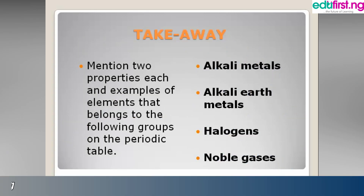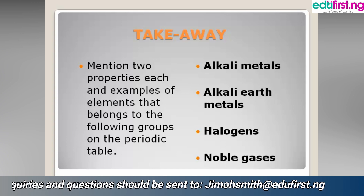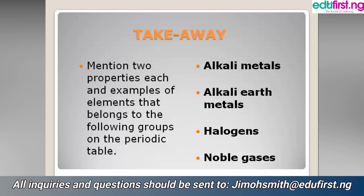That is the content for today. The take-home assignment is to mention two properties and examples of elements that belong to the following groups on the periodic table: one — alkali metals, two — alkaline earth metals, three — halogens, four — noble gases.